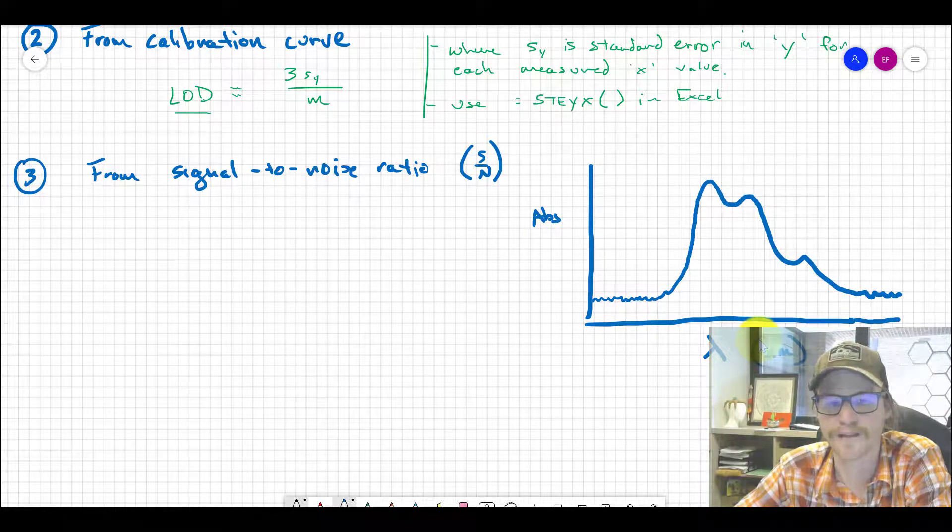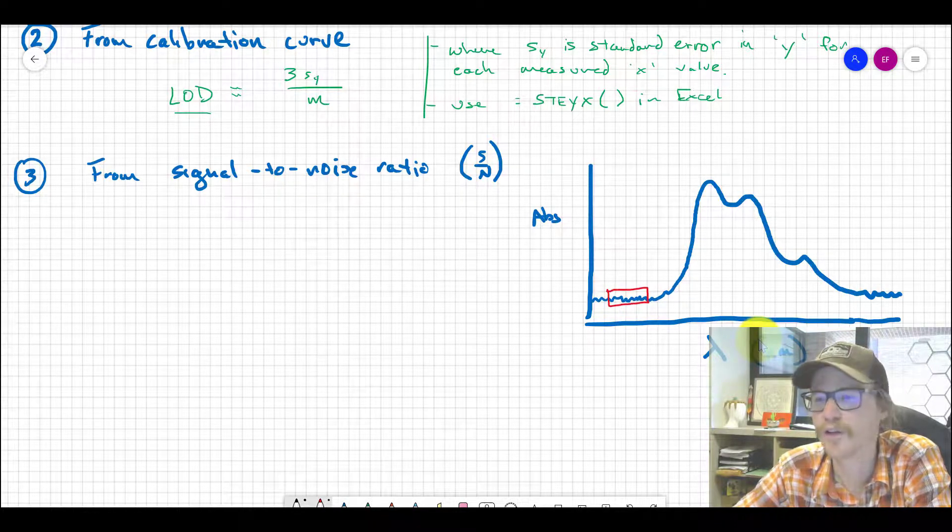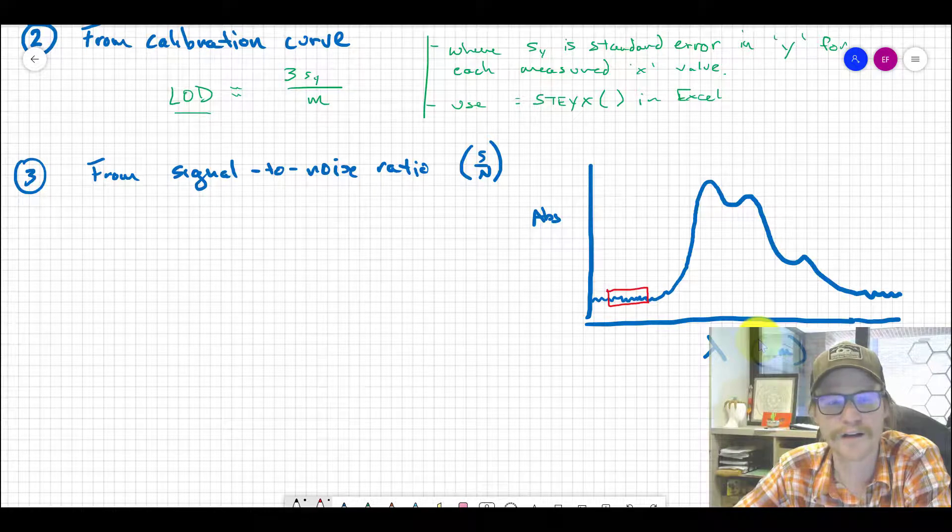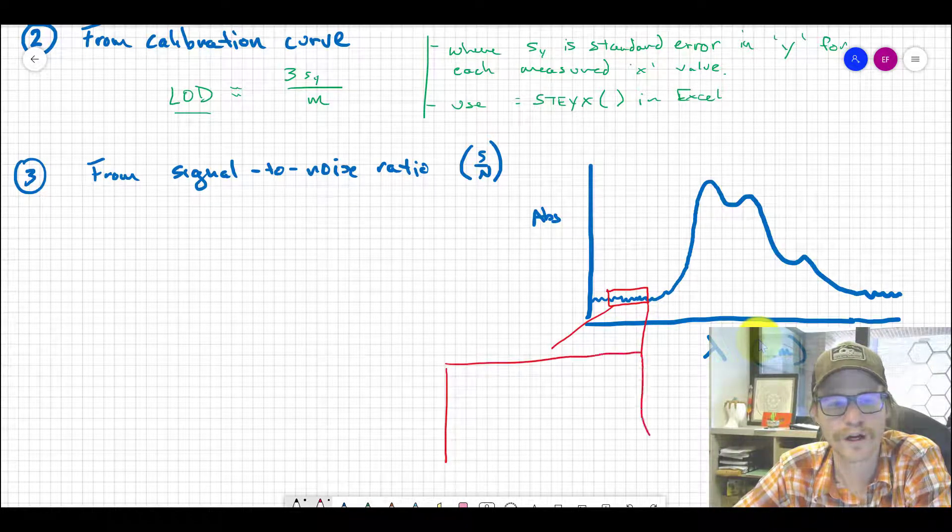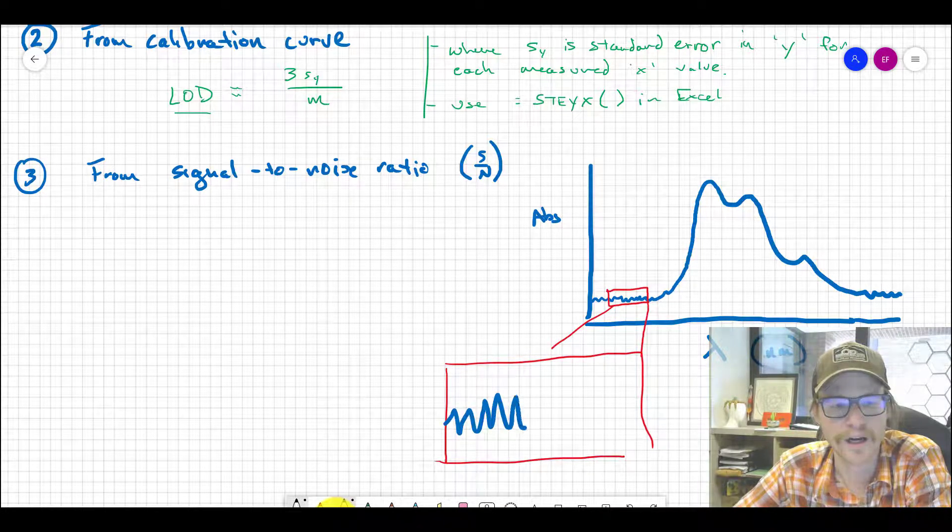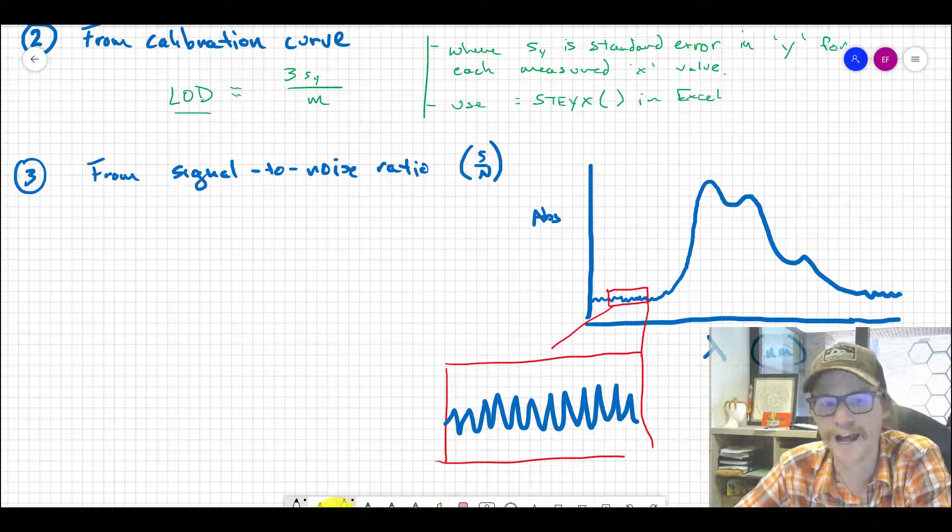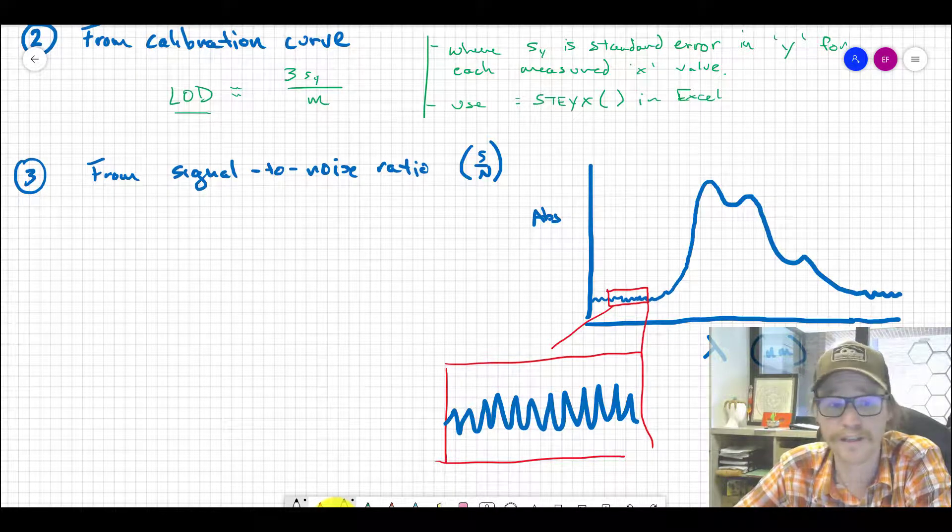If we zoom in on the baseline—the area where there's no analyte, just background signal—and expand that to a zoomed-in perspective, we'd see a non-flat line. There's an actual amount of signal being generated there...